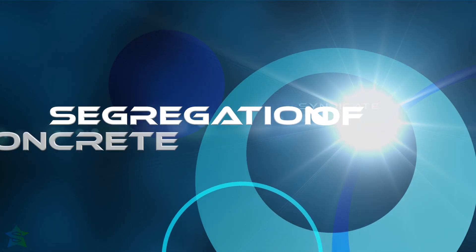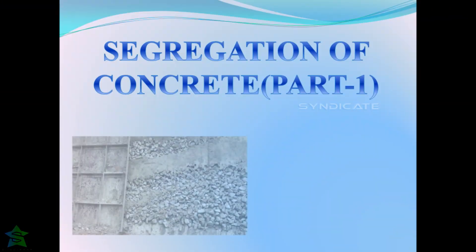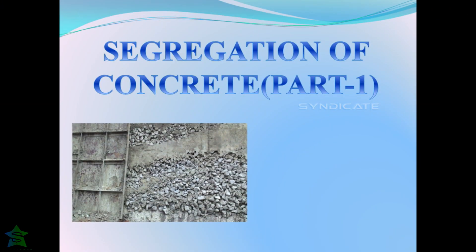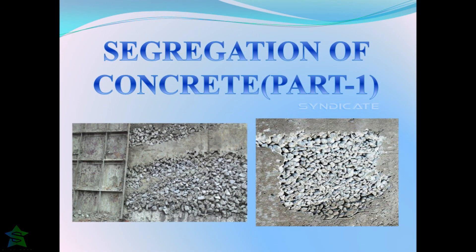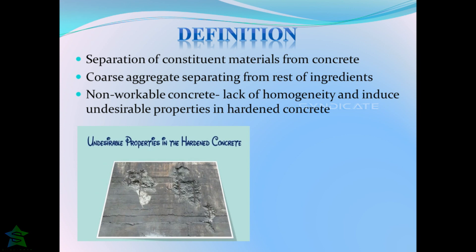Hello friends, today our topic is segregation of concrete. From the time of mixing and finishing, concrete is subjected to transportation, placing, and compaction. During this time the mixture must remain uniform throughout. If it doesn't remain uniform, then it means that the ingredients are subjected to a process known as segregation. Segregation means separation of constituent materials in concrete.